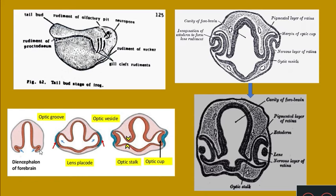These two evaginations are called as the optic vesicles. The optic vesicles grow and they enclose a cavity inside called as the optocoele, which is obviously in continuation with the cavity of the diencephalon or the third ventricle. Eye development is initiated by the formation of these two optic vesicles. The basal part of the optic vesicle is connected to the brain by a narrow optic stalk.